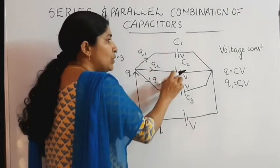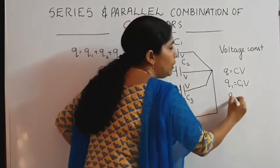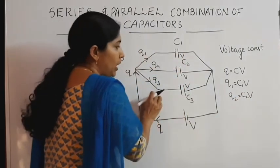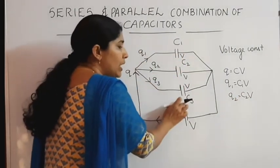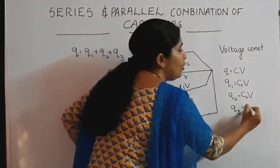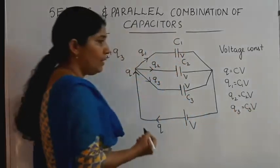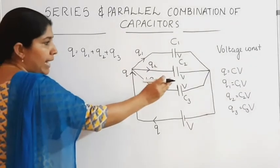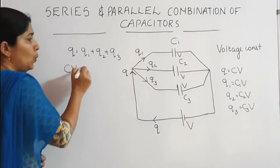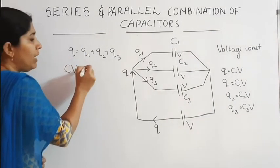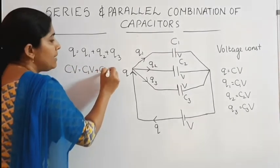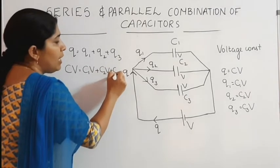Charge Q2 flows through capacitor C2, so Q2 is equal to C2 into V. Q3 flows through capacitor C3, so Q3 is equal to C3 into V. Substituting these values: CV is equal to C1·V plus C2·V plus C3·V.